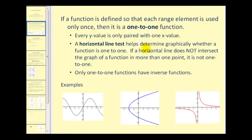A horizontal line test helps determine graphically whether a function is one-to-one. If a horizontal line does not intersect the graph of a function in more than one point, it is a one-to-one function. And what's so important about this is that only one-to-one functions have inverse functions.